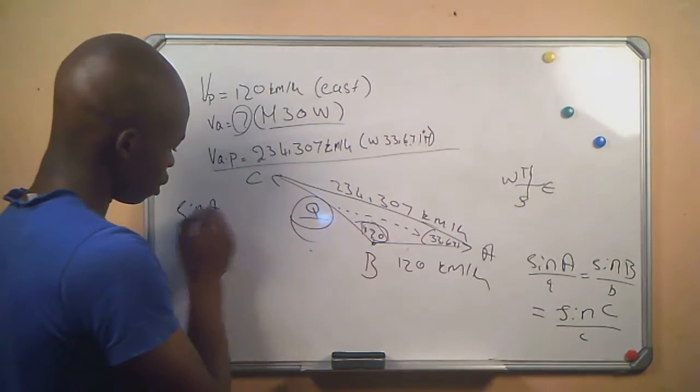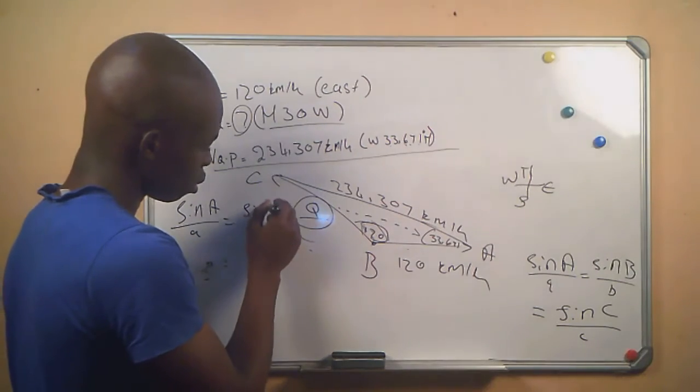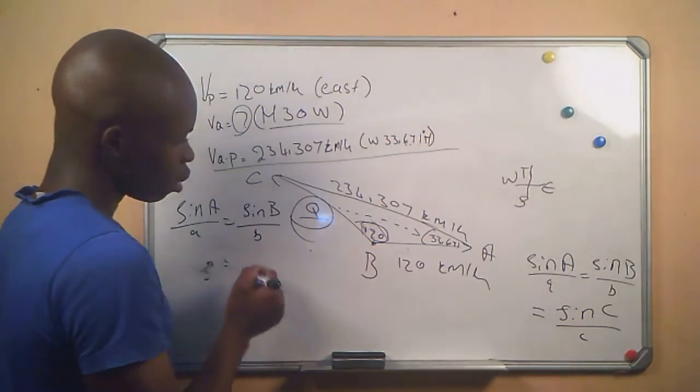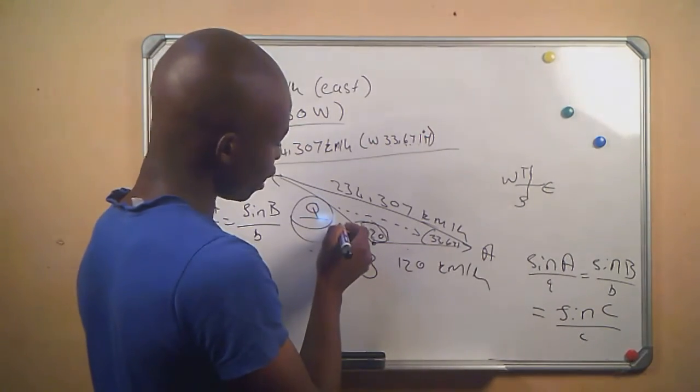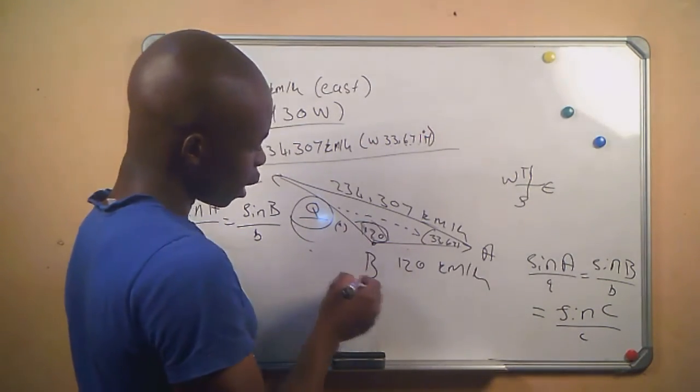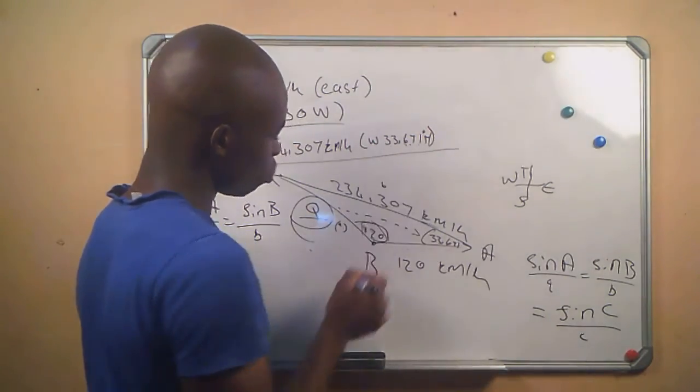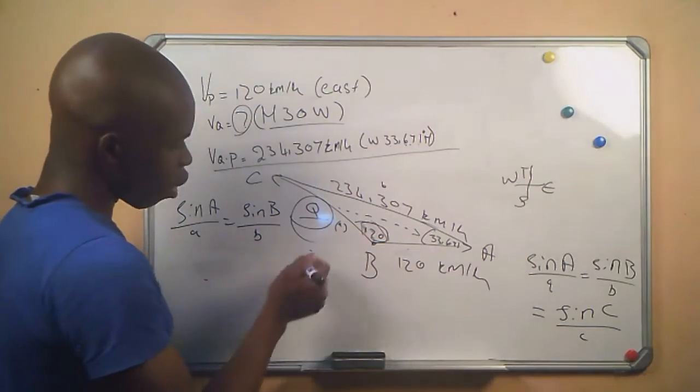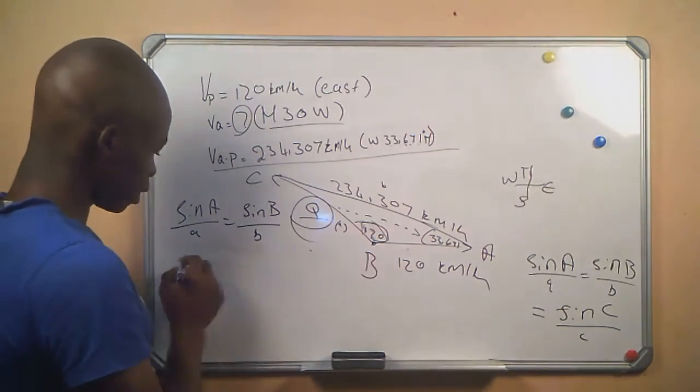Sine a divided by a equals sine b divided by b. And then since this is our Q, we will say it's our small a. And this, since it's b, this our relative velocity will say it's a small b. And then we are looking for the small a which is Q.